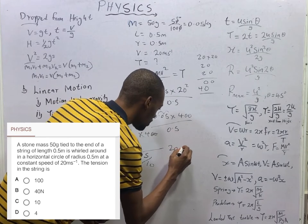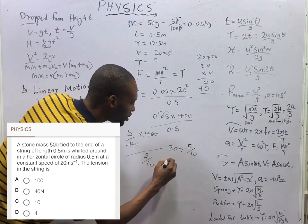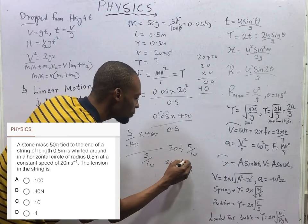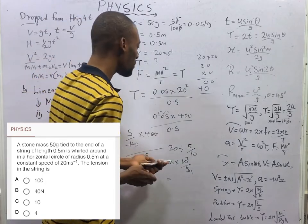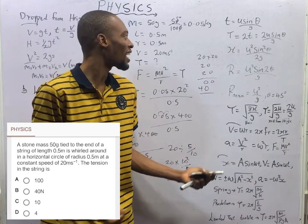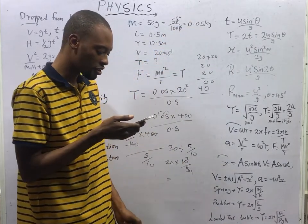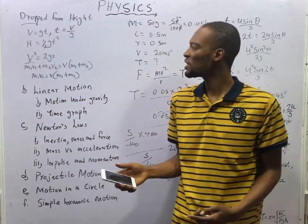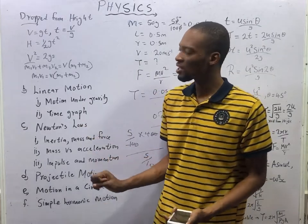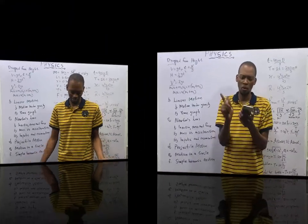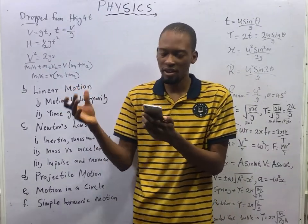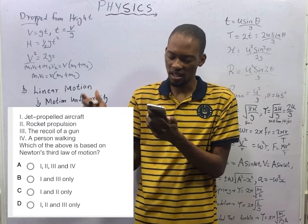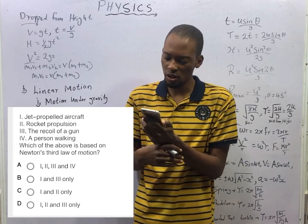Roman numeral I: jet-propelled aircraft. Roman numeral II: rocket propulsion. Roman numeral III: the recoil of a gun. Roman numeral IV: a person walking. Which of the above is based on Newton's third law of motion?